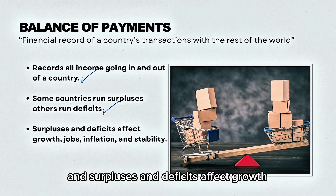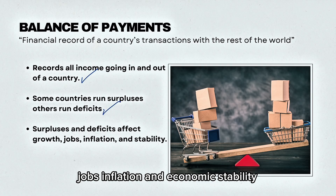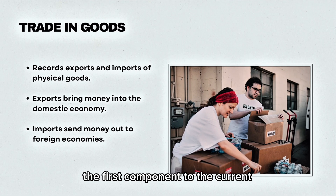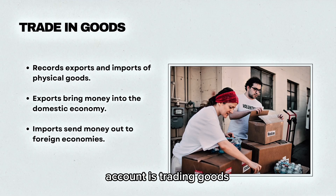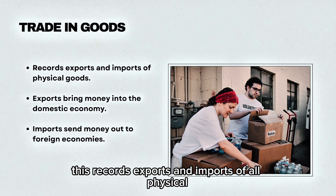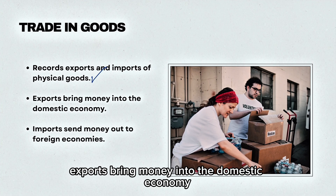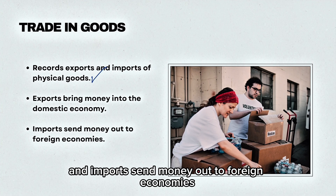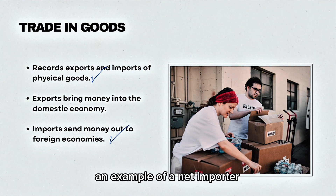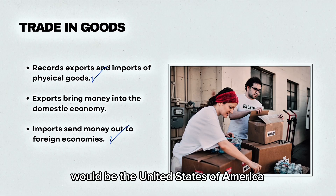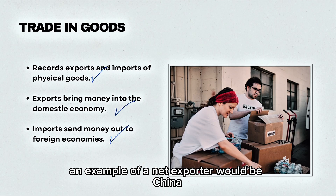Surpluses and deficits affect growth, jobs, inflation, and economic stability. The first component of the current account is trade in goods. This records exports and imports of all physical or tangible goods. Exports bring money into the domestic economy and imports send money out to foreign economies. An example of a net importer would be the United States of America, and an example of a net exporter would be China.